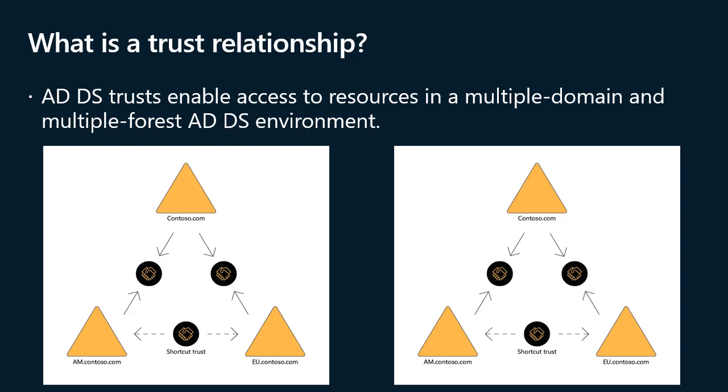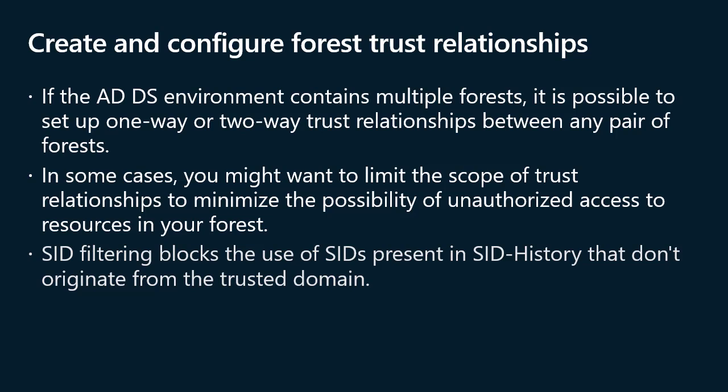Forest trust relationships provide the most flexibility from an authentication standpoint. They are easier to establish, maintain, and administer than separate external domain-level trusts. If the ADDS environment contains multiple forests, you can set up one-way or two-way trust relationships between any pair of forests. With a one-way forest trust, you grant users in the trusted forest access to resources in the trusting forest; with a two-way forest trust, users on each side can access resources in the other forest. When creating a trust you specify the root domain of each forest, and because forest trusts are transitive for all domains in each forest, you effectively establish a trust between each pair of domains across both forests. However, unlike intra-forest trusts, forest trusts are not transitive across multiple forests — they can only be created between two forests and cannot be implicitly extended to a third.